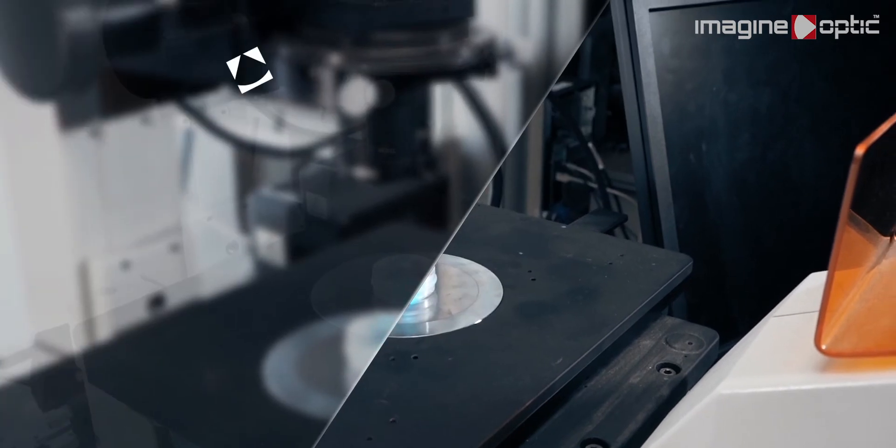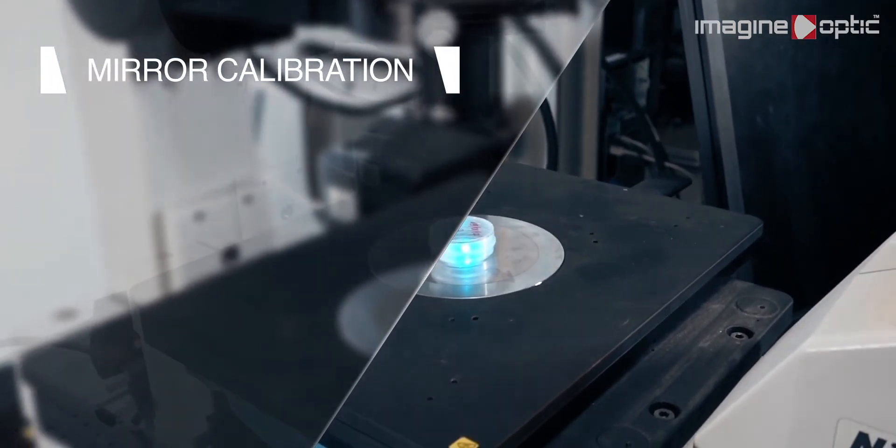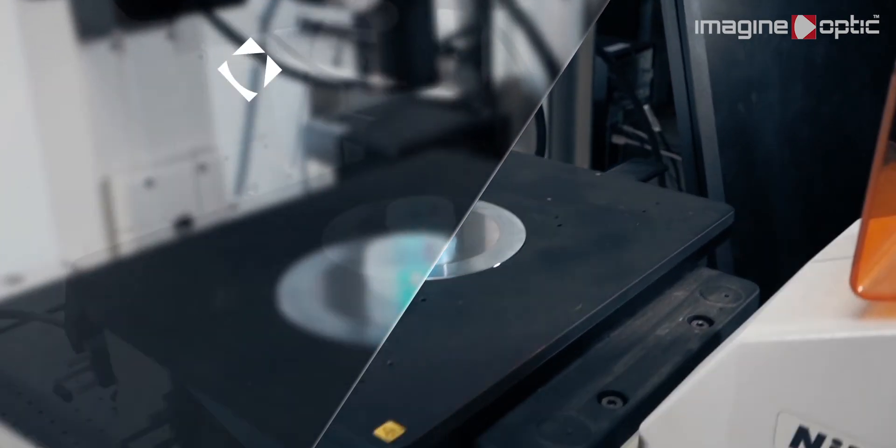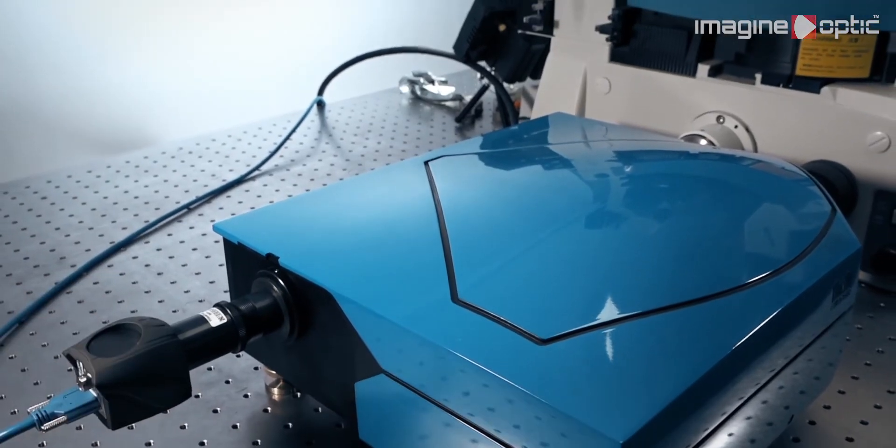Once Mikao is aligned, we calibrate the deformable mirror using a 1 micron fluorescent bead at the surface of the coverslip as a point source to measure the wavefront using the wavefront imager on the camera port of Mikao.